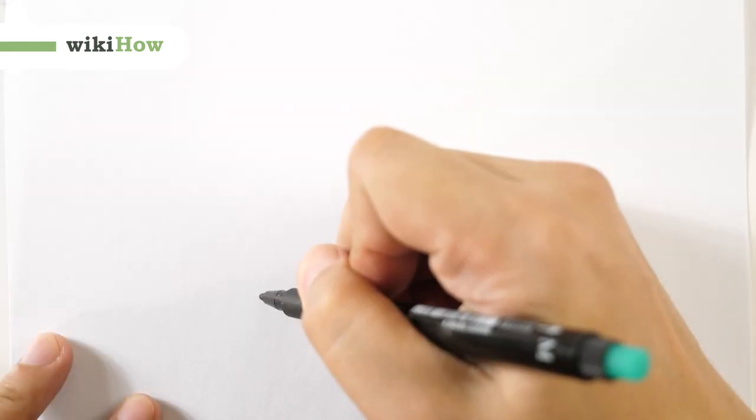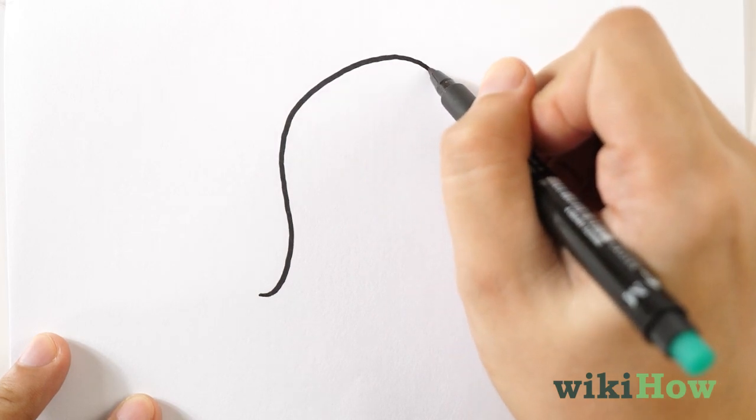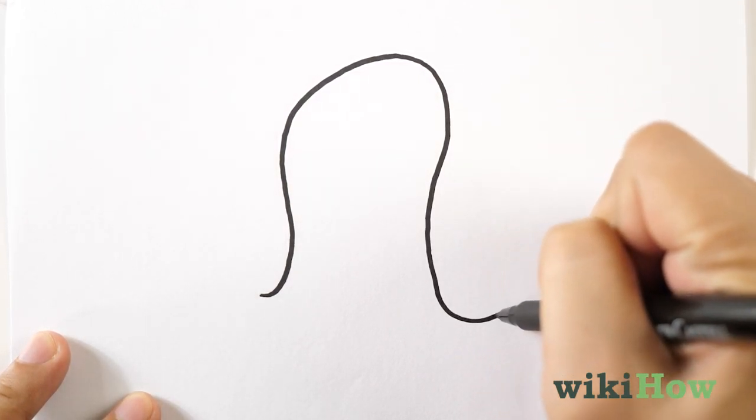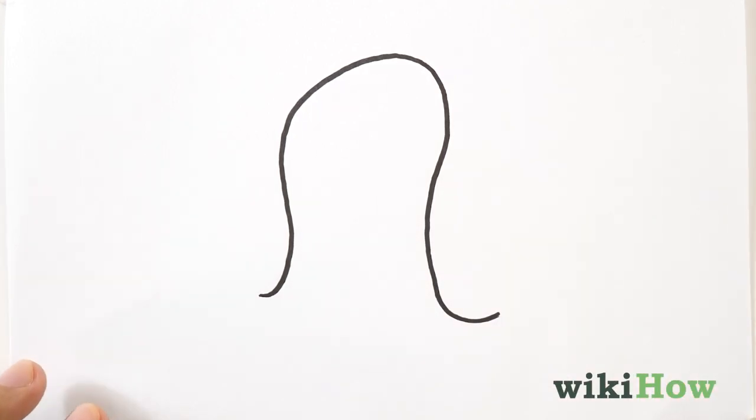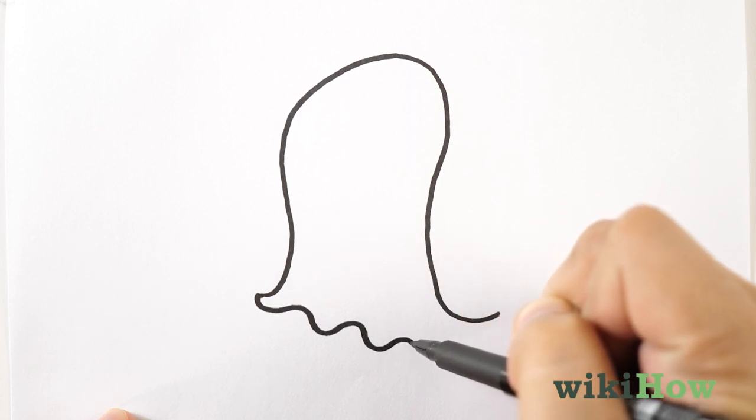To draw a ghost, first draw an upside-down U-shape with tails that curve slightly outward to one side. This is the outline of your ghost's body. Next, connect the two tails with a wavy line. This is the bottom of your ghost.